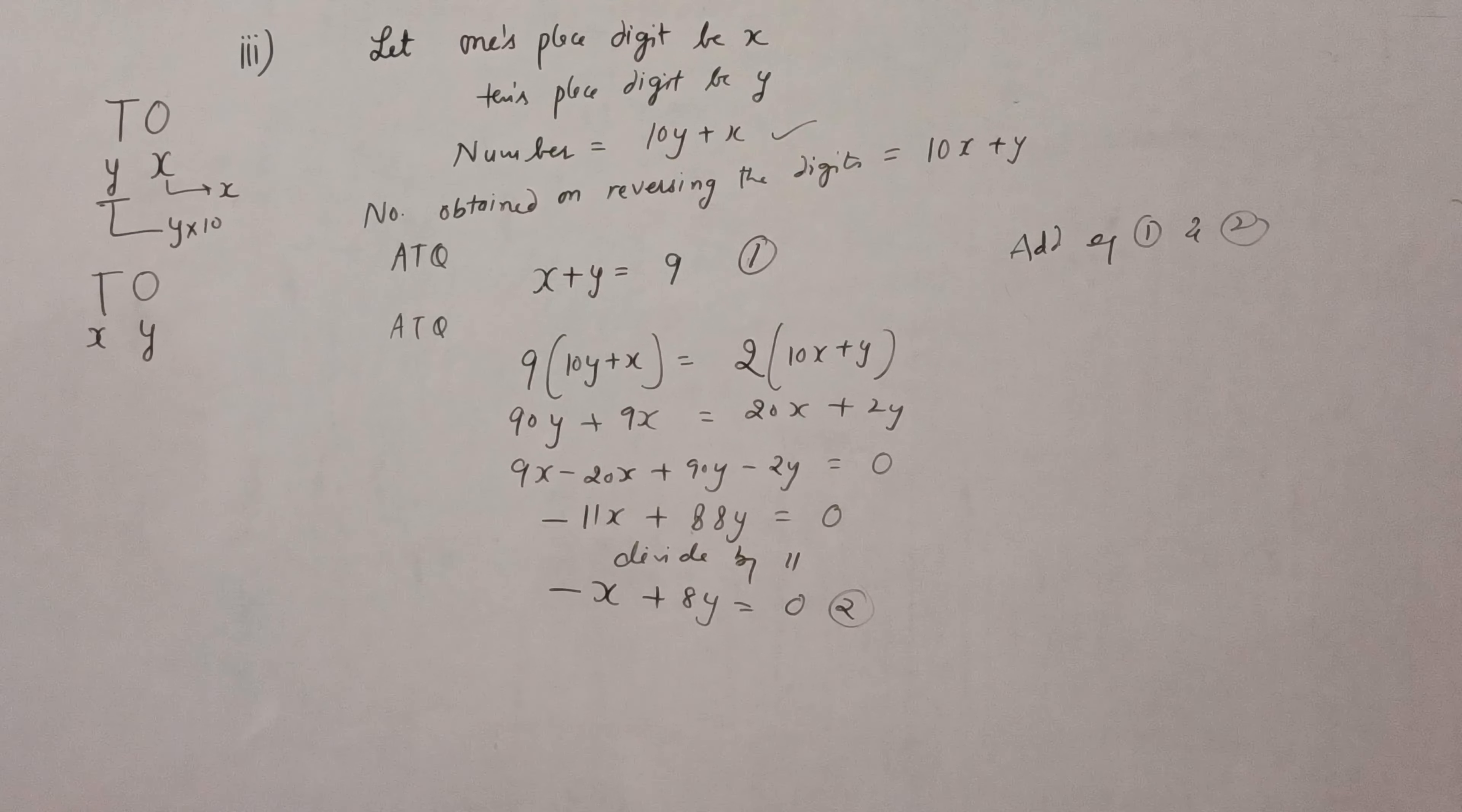Greetings everyone, today we will do part 3 of question 2 of exercise 3.4. The question is: the sum of the digits of a 2-digit number is 9, also 9 times this number is twice the number obtained by reversing the order of the digits.